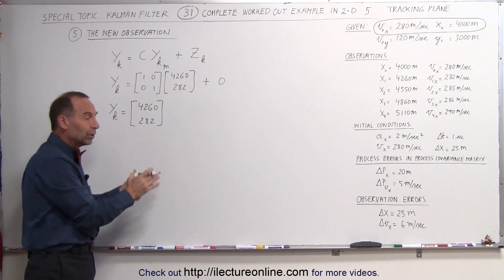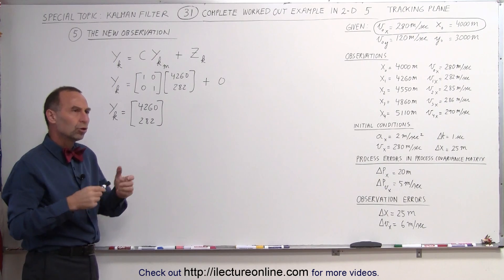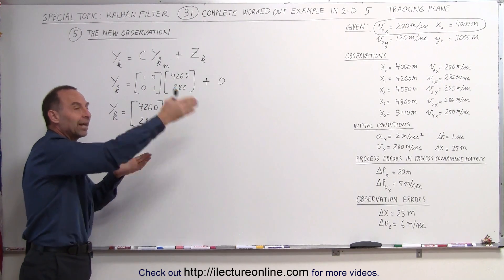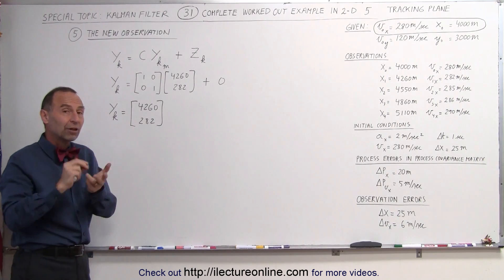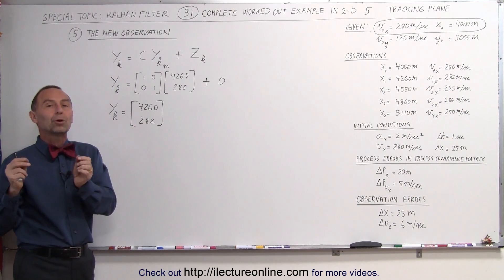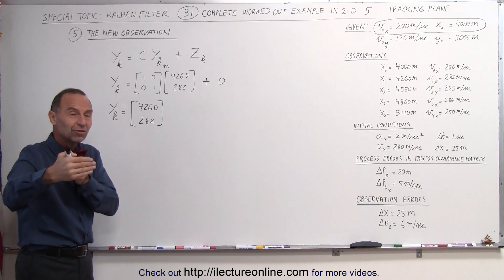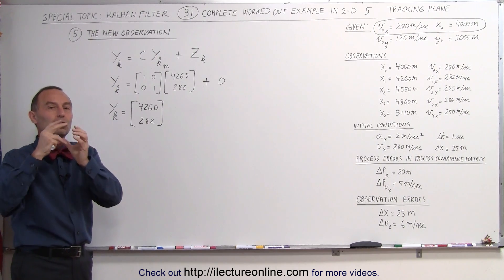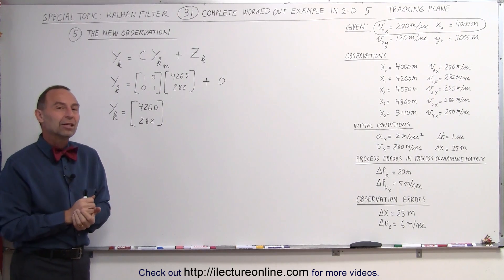Now we're ready to combine this with the Kalman gain to come up with the new state — because we had the predicted state before. We're going to adjust the predicted state with the observation and the Kalman gain to come up with the best estimation of the position and velocity of the plane. So in the next video, we're going to take the measurement input and combine it with the Kalman gain, the previous predicted state, and the process covariance matrix altogether to come up with a new adjusted state of where we think the plane is going to be.